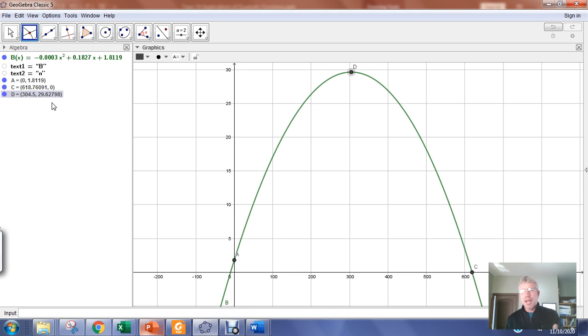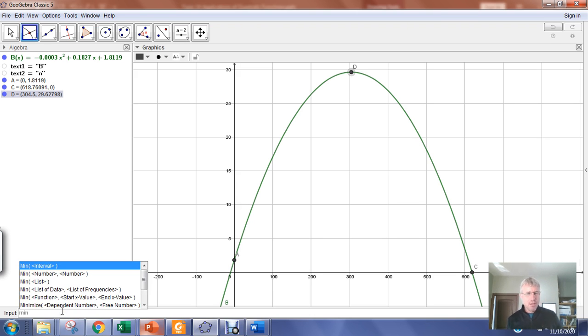If it's a maximum, if it's a minimum, it's the same thing. But instead of max, you type min, which will prompt us with a list of menu items. And you pick min function start X value end X value. And you go through the same process where you type in the function name, and then you type in a value that's to the left, and then a value that's to the right of the input location of the vertex.